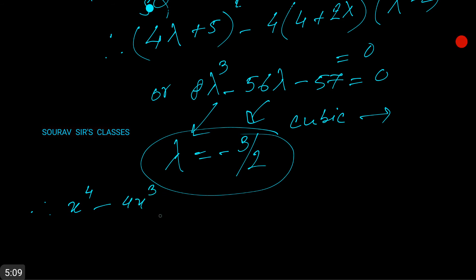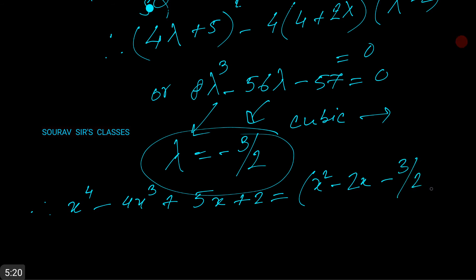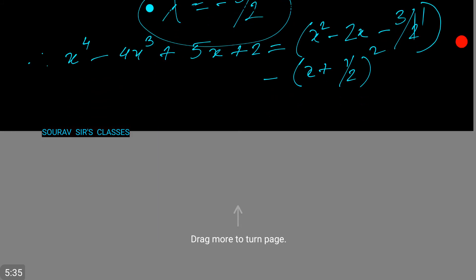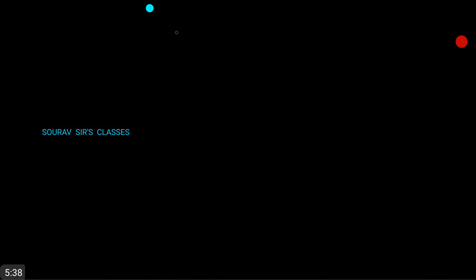Therefore, x⁴ - 4x³ + 5x + 2 equals (x² - 2x - 3/2)² minus (x + 1/2)², which decomposes to (x² - x - 1).